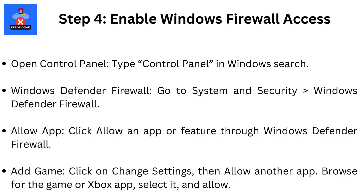Step 4: Enable Windows Firewall permissions. Firewall restrictions can block game installations, so make sure Farming Simulator 2025 has the necessary permissions. Open Control Panel by typing it in Windows Search, then navigate to System and Security, then Windows Defender Firewall.